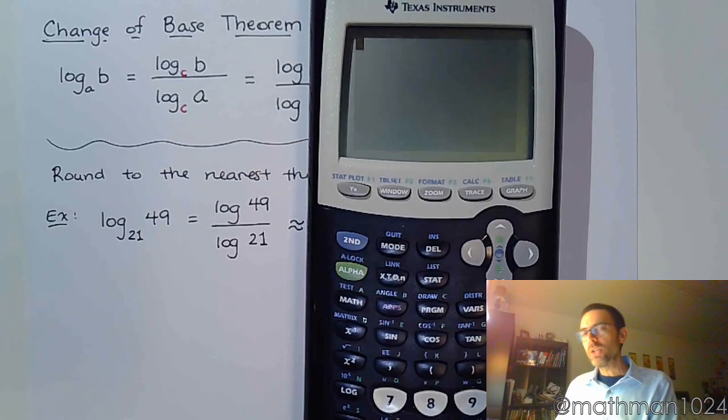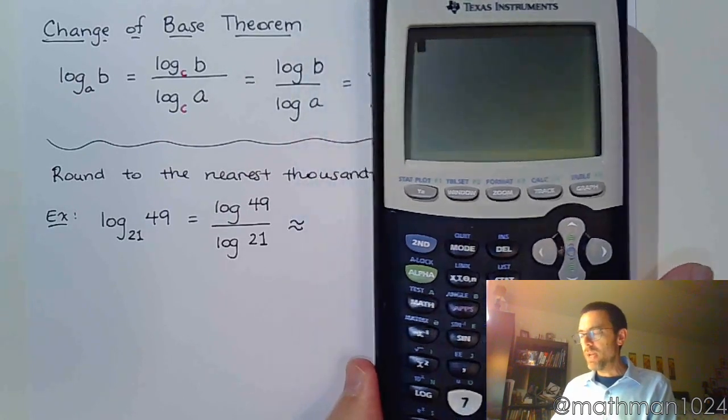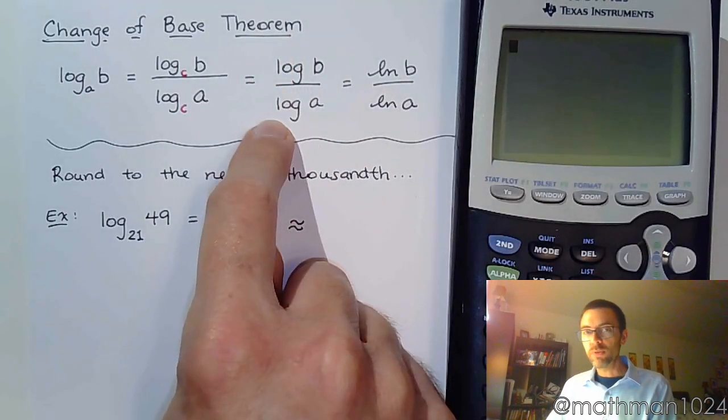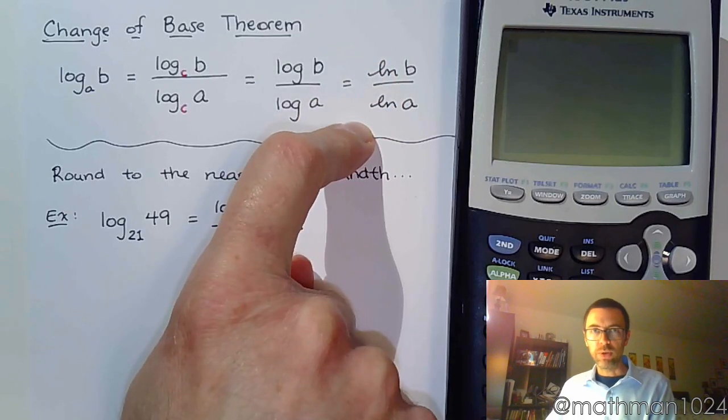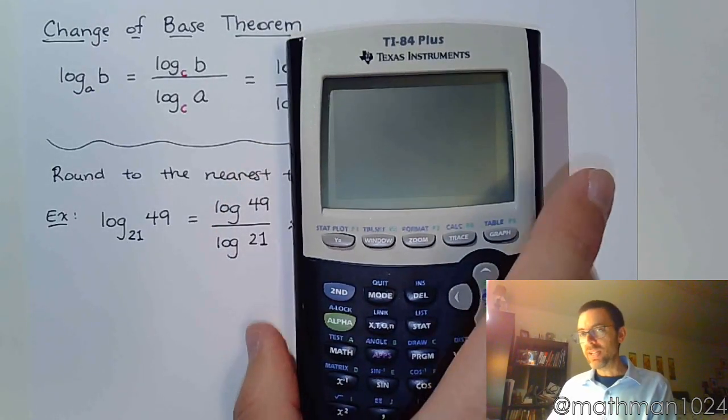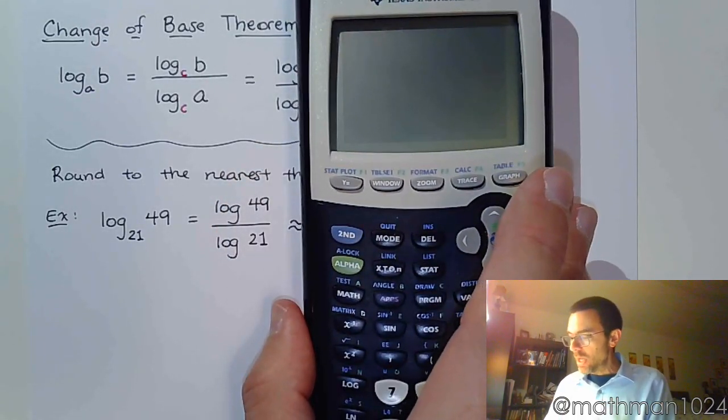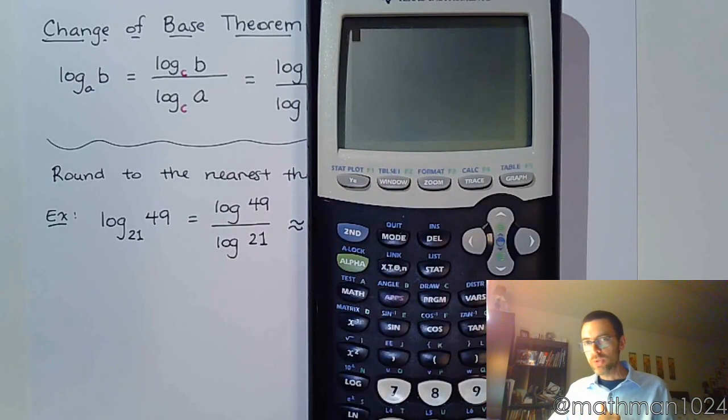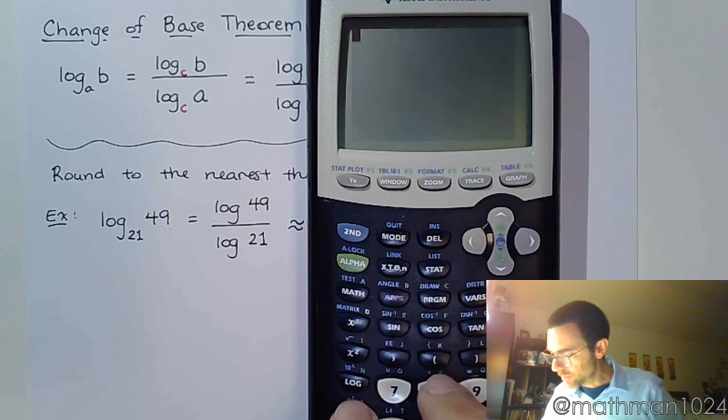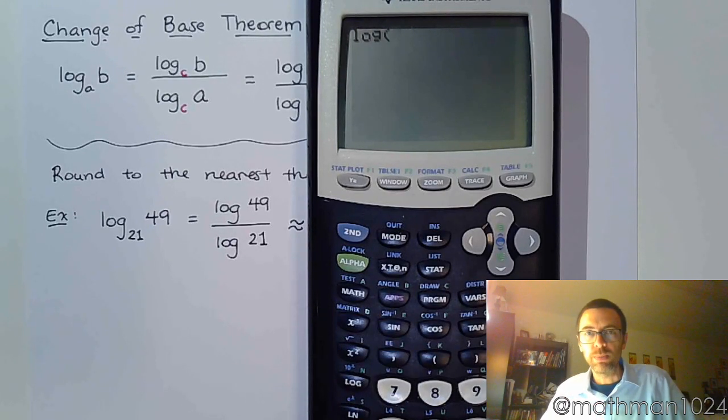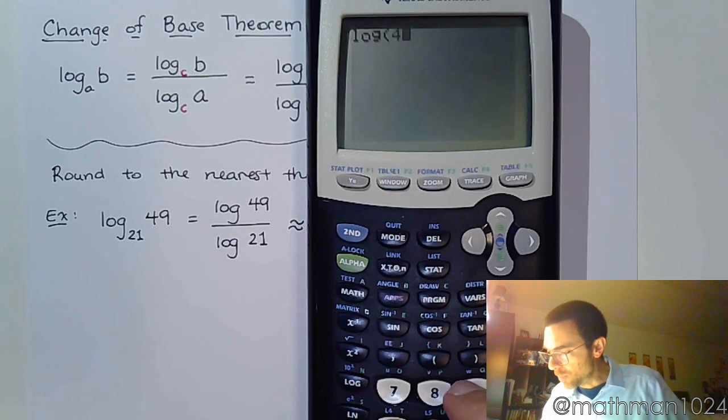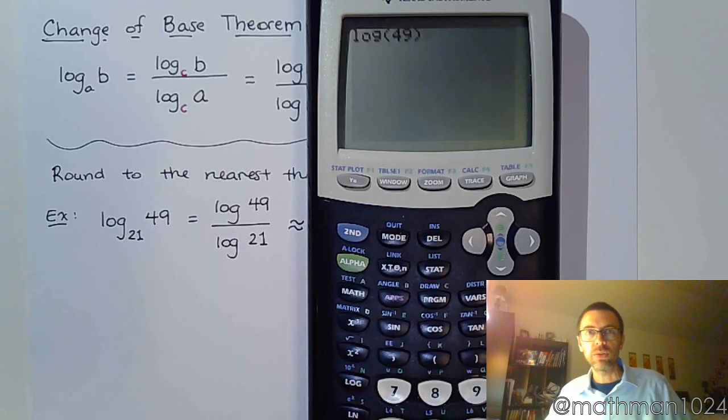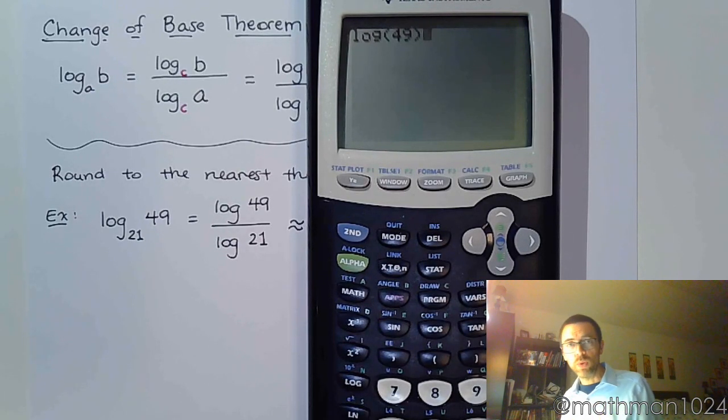Alright, so notice I used common log. The change of base theorem says you could use common log for both or natural log for both. So I want you to see that it doesn't really matter which one we use. What does matter is that you use parentheses correctly. So, when you type in log, notice how it automatically opens up parentheses for you. So when I type 49, I've got to make sure that I close that.